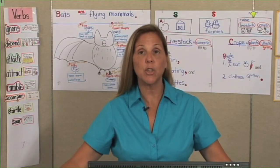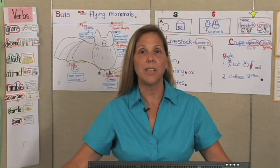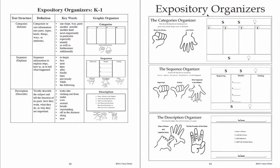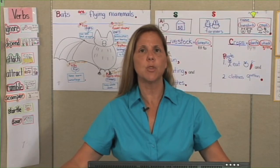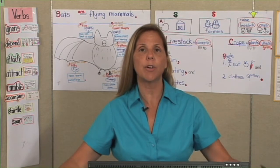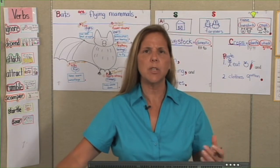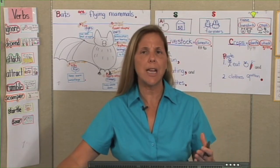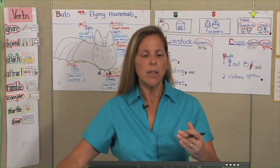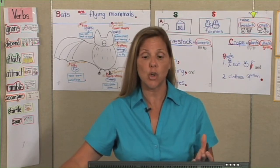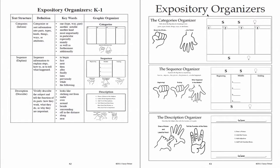Please turn to page 42 and 43. We just finished lecture notes and content diagrams, and now I have some tools that you can use in order to figure out what organizer should I use — sequencing, should I use the categories, am I using the description? This is a wonderful at-a-glance chart for you. On the left page, on page 42, I've given you a little visual so that you can see.